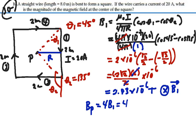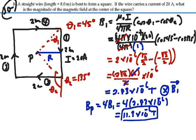So that's going to be equal to 4 times 2.83 times 10 to the minus 6, and that's going to give me 11.3 times 10 to the minus 6 Tesla. They're all in the same direction, so that all would be into the page. So the magnetic field at the center of the square is going to be 11.3 micro Tesla into the page and that's our answer.